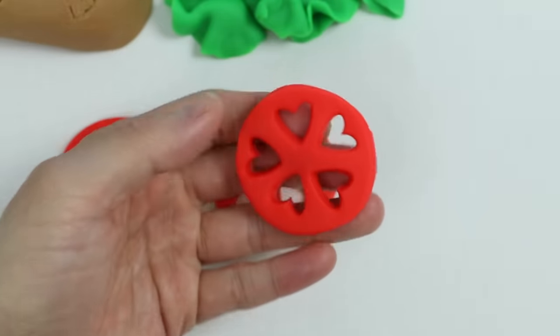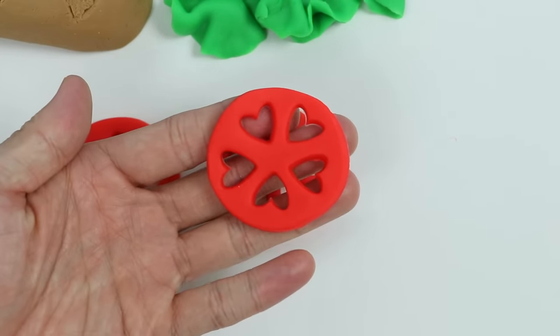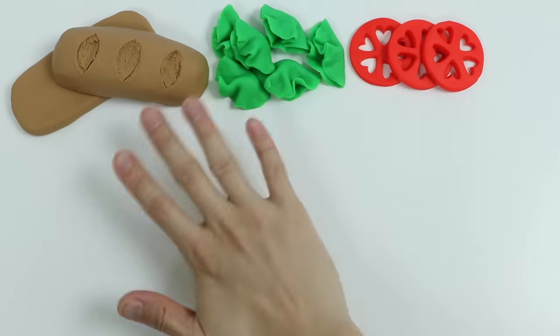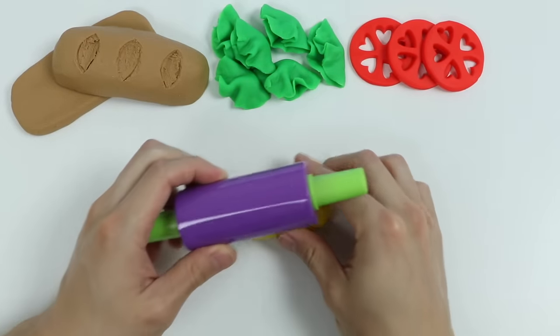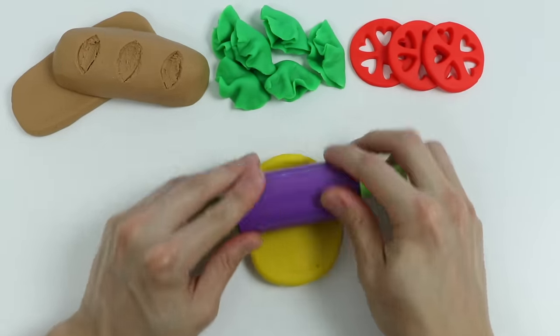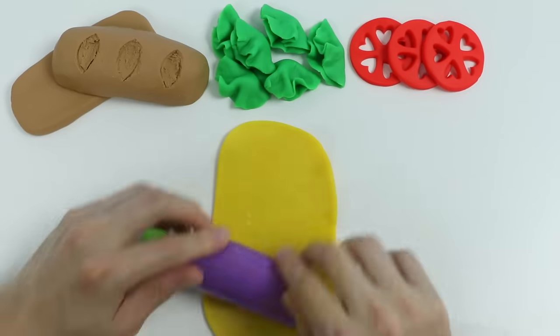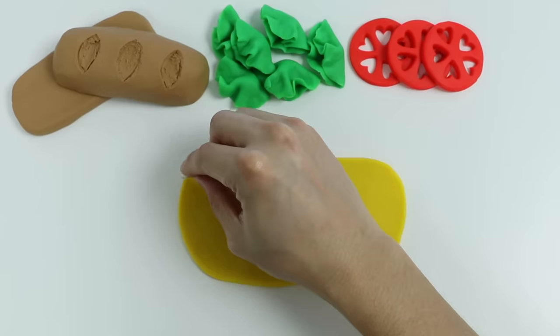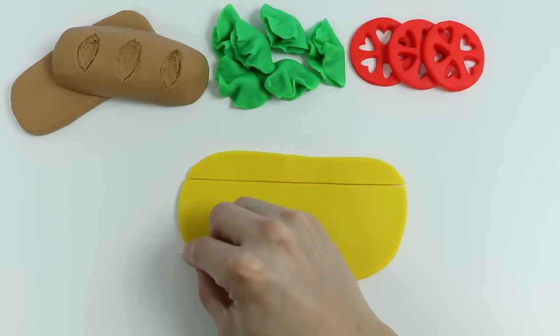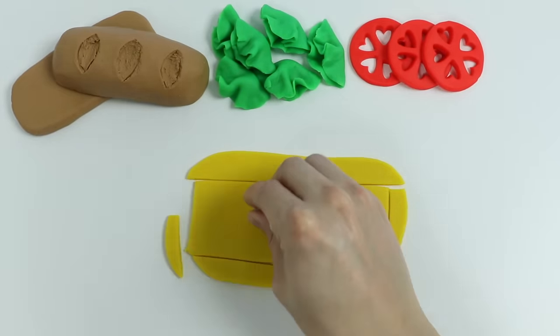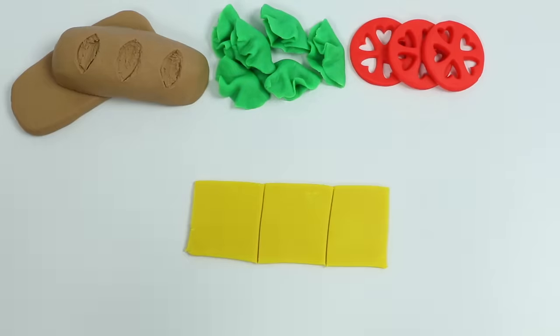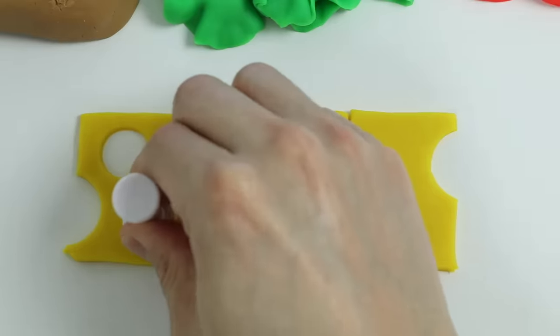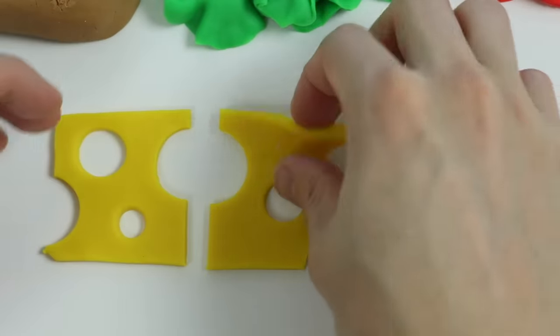These are the prettiest tomato slices. Now let's roll out some yellow Play-Doh. This time we'll use a tool to make square shapes, and then we'll use a circle cutter to add details. Check it out, we made three slices of Swiss cheese.